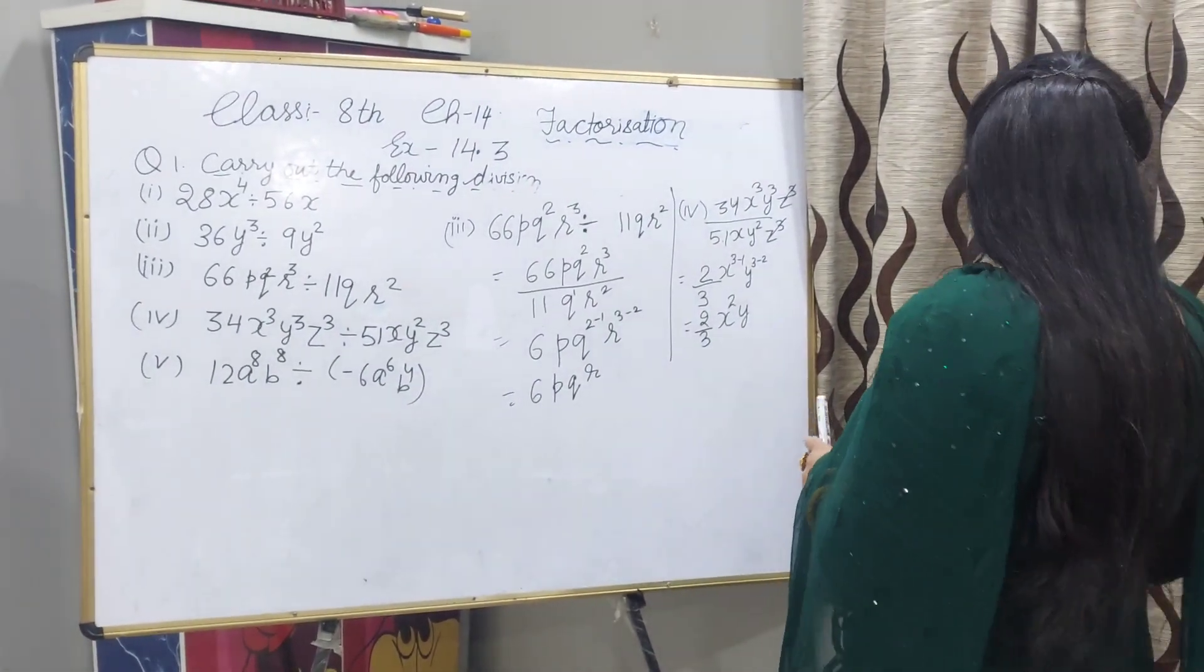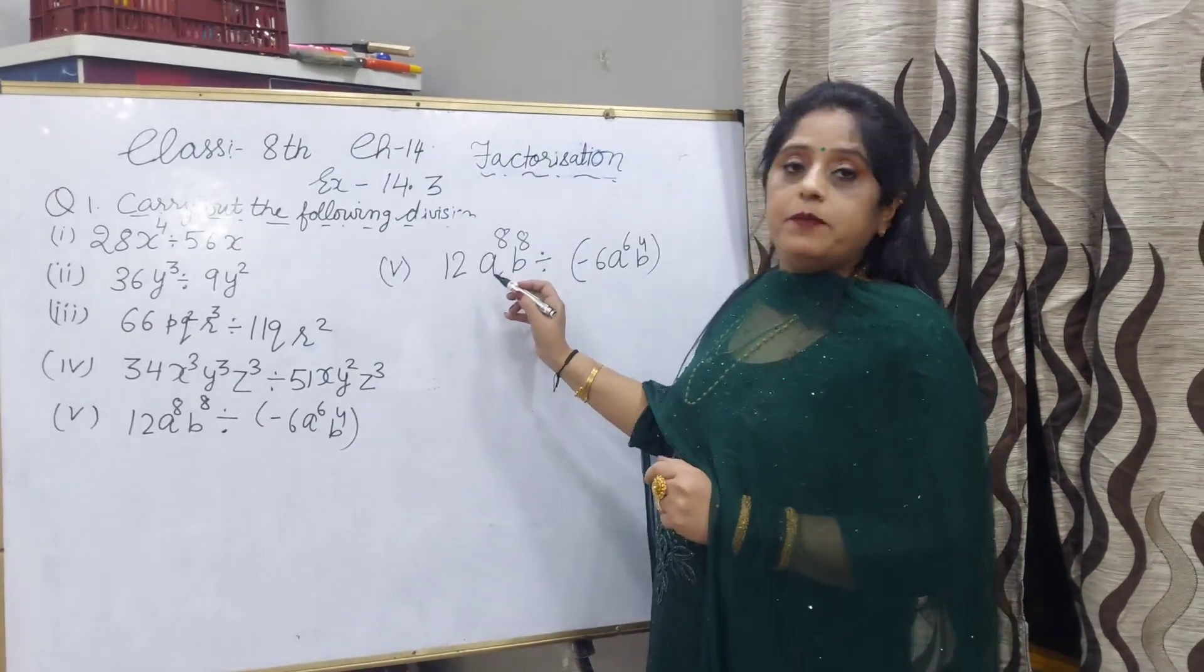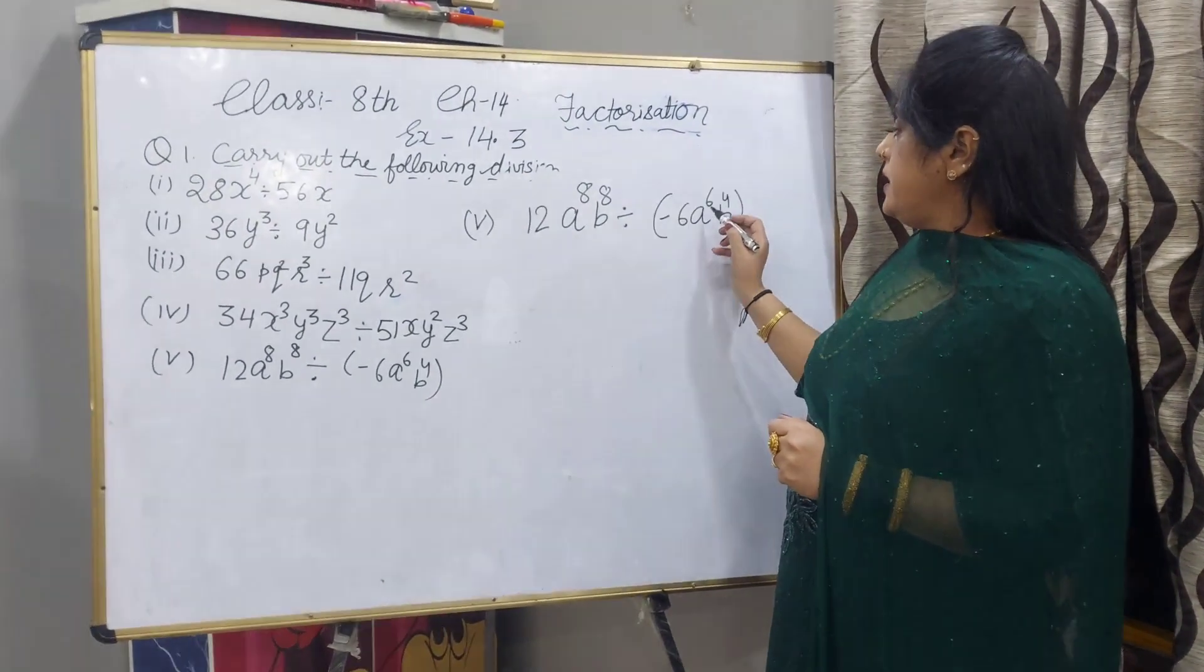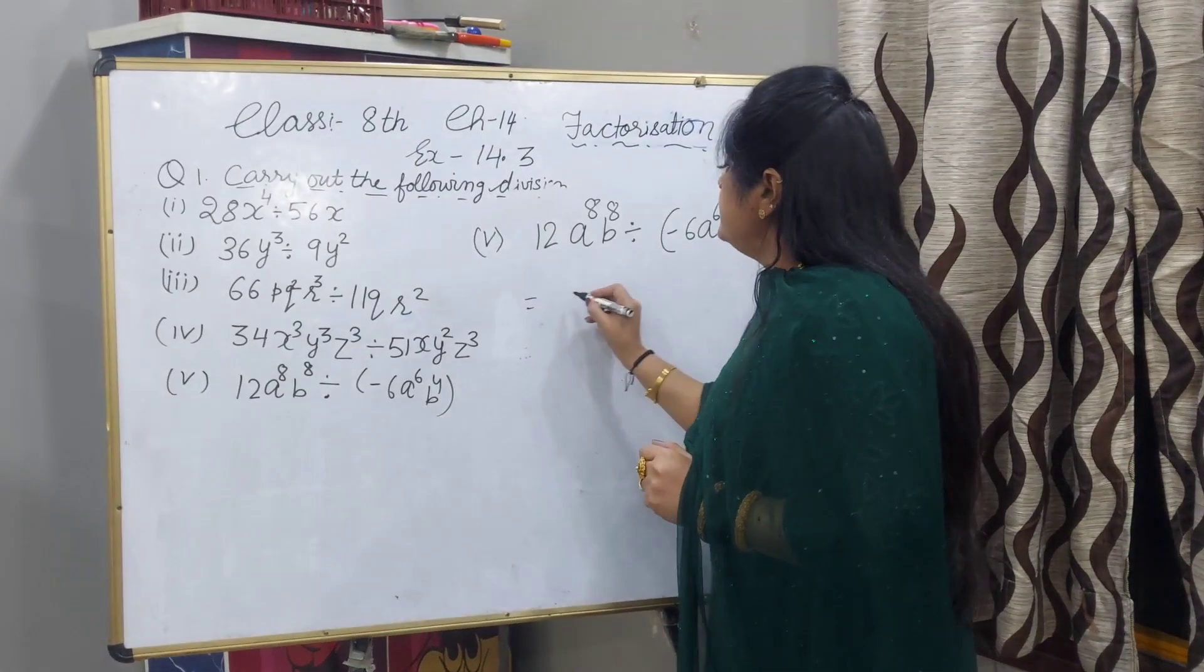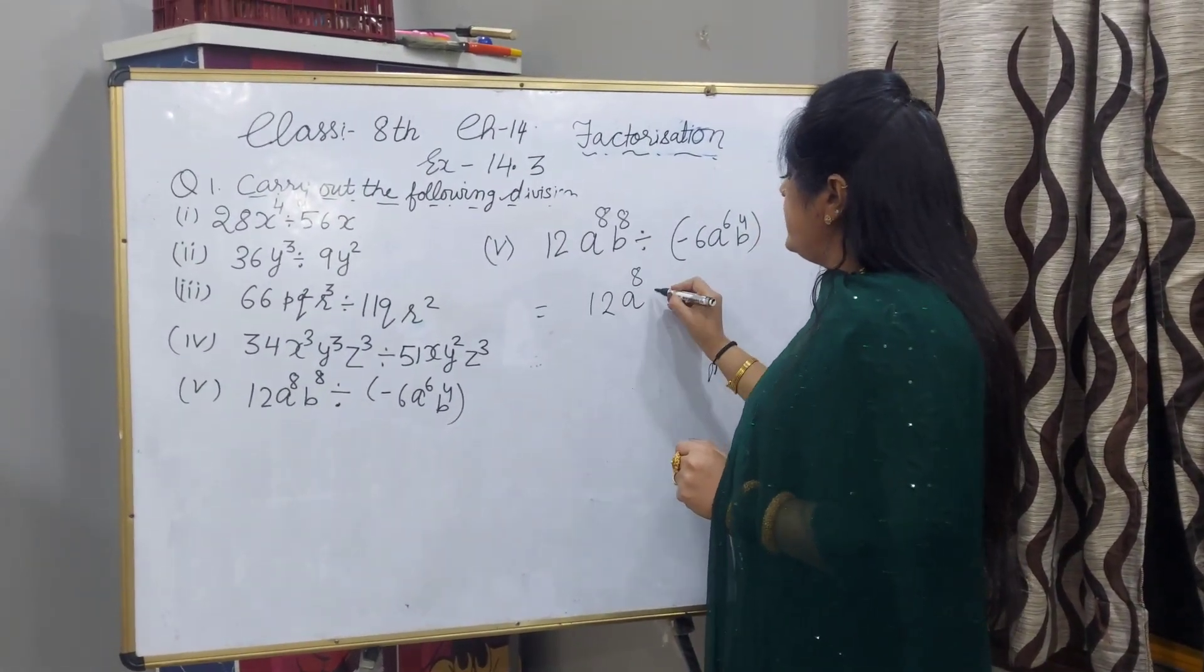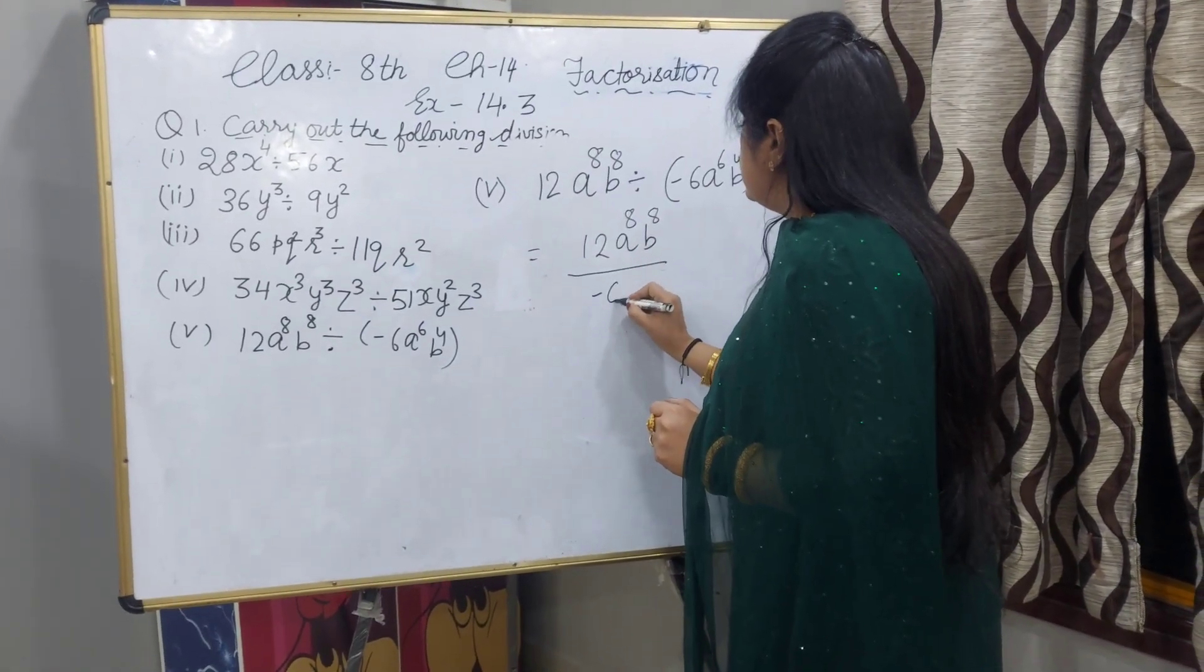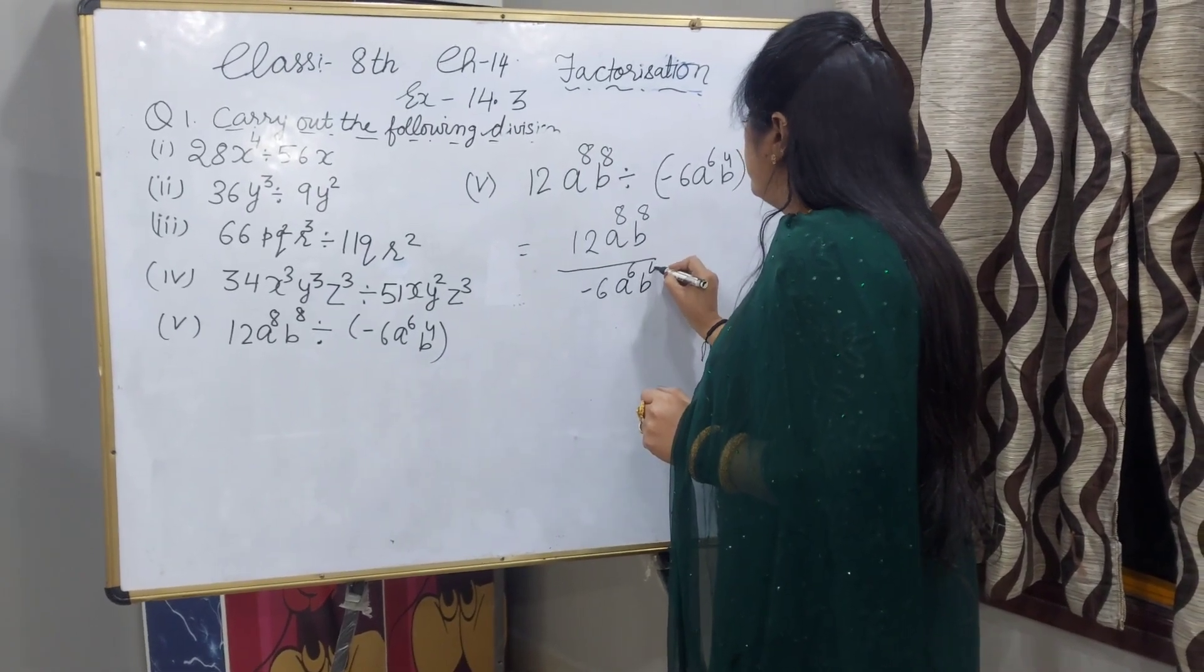Now I will explain fifth part. 12a^8b^8 you have to divide by minus 6a raised to power 6, b raised to power 4. We can write 12a^8b^8 by minus 6a^6b^4.